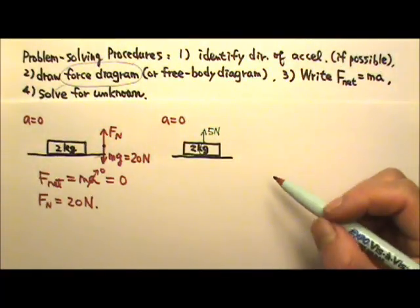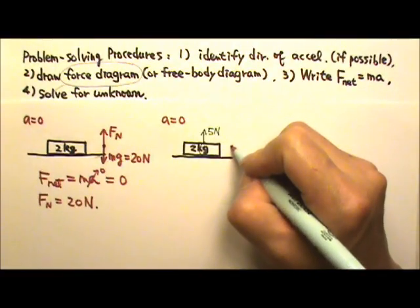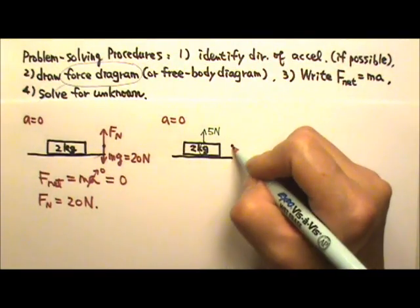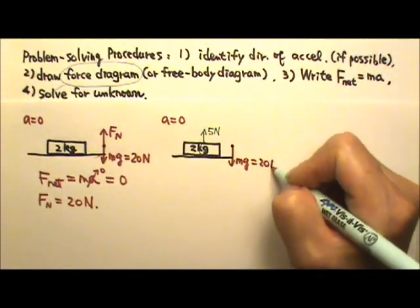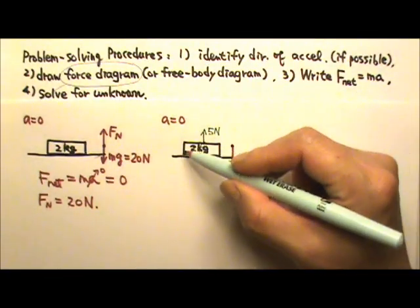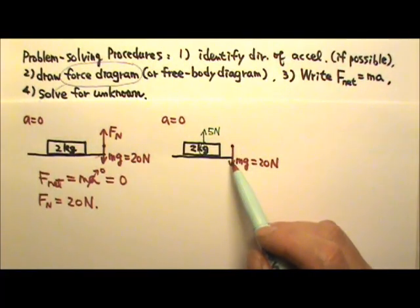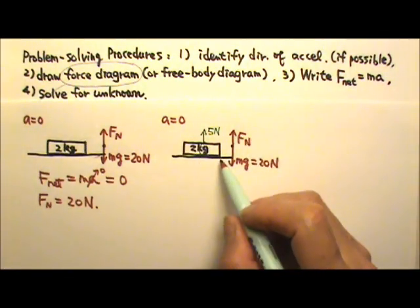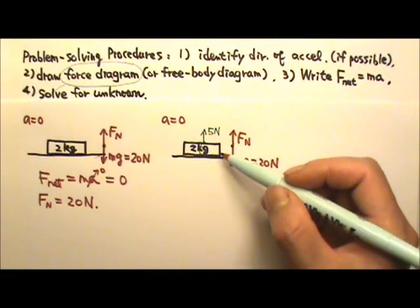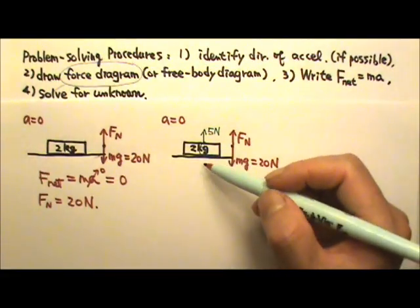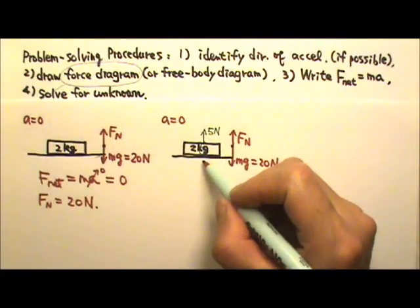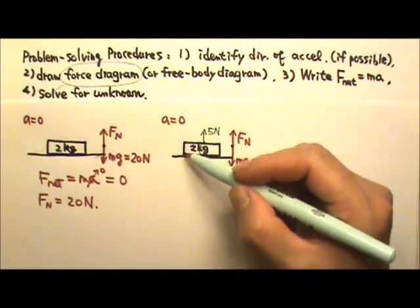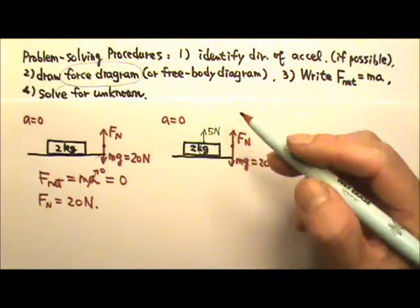There is no direction for acceleration. Draw the force diagram — again a dot to represent the book. The only non-contact force is mg, which is 20 newtons downward. The book is touching the contact surface, so we have normal force upward. There is no tendency to slide and no sliding motion, so no friction. The book is also connected to the string, so we add the applied tension of five newtons upward.